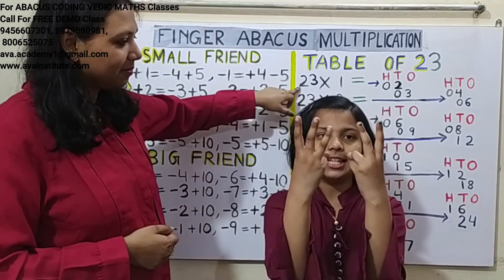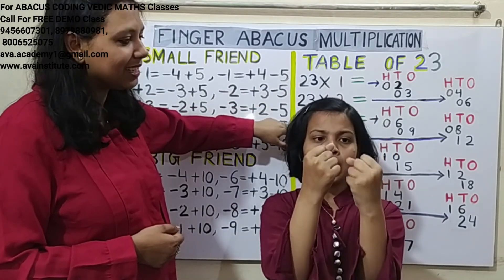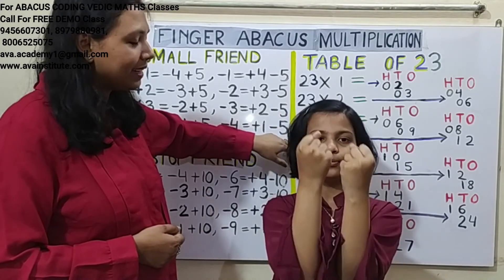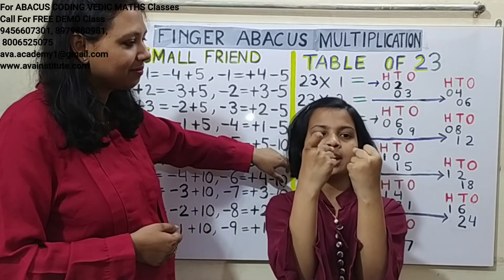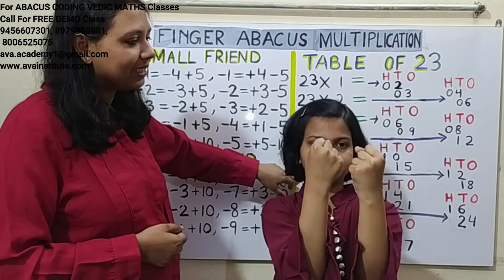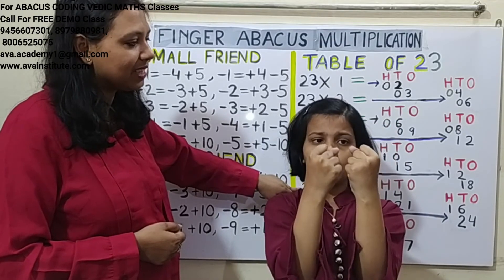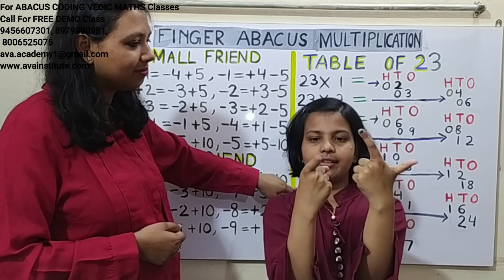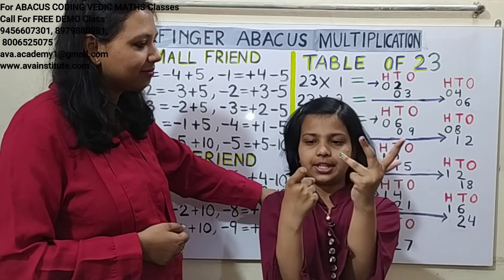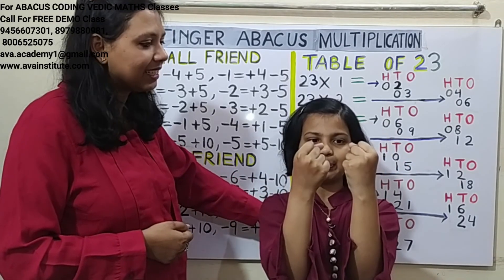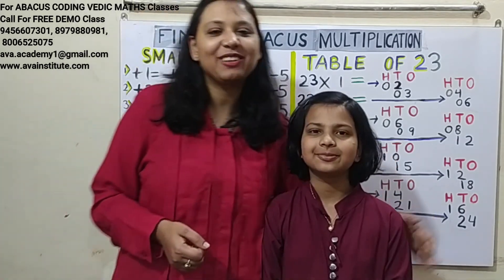23 × 1: 2 × 1 = 2, 3 × 1 = 3, answer is 23. 23 × 2: 2 × 2 = 4, 3 × 2 = 6, answer is 46. 23 × 3: 2 × 3 = 6, 3 × 3 = 9, answer is 69. 23 × 4: 2 × 4 = 8, 3 × 4 = 12, answer is 92. 23 × 5: 2 × 5 = 10, 3 × 5 = 15, answer is 150. 23 × 6: 2 × 6 = 12, 3 × 6 = 18, answer is 138. 23 × 7: 2 × 7 = 14, 3 × 7 = 21, answer is 161. 23 × 8: 2 × 8 = 16, 3 × 8 = 24, answer is 184. 23 × 9: 2 × 9 = 18, 3 × 9 = 27, answer is 207. Very good Kritika, good job!